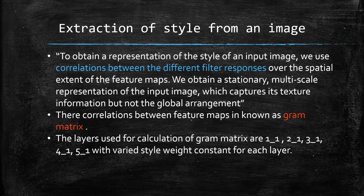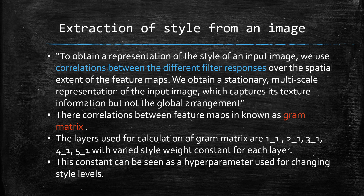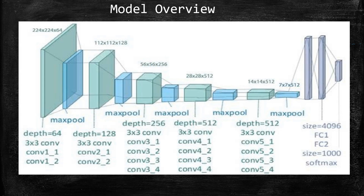An important difference to note: for content we use only one layer — conv4_2 — which is high in the hierarchy. For style, we use lower layers as well. Style is captured from lower layers and content is captured only from the high layer. The layers used for style each have a constant multiplied to their gram matrix — this constant is a hyper-parameter. If you increase the constant for a particular layer, that layer's style is captured more. You can experiment with using different layers and may get amazing results.